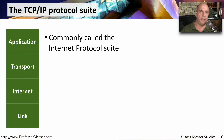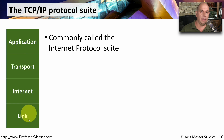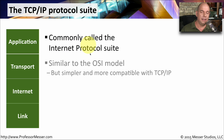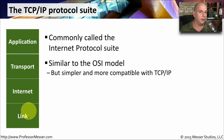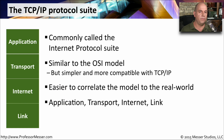The TCP/IP protocol suite is a model with four layers: an application layer, a transport layer, an internet layer, and a link layer. You may hear this referred to as the internet protocol suite. This is similar to the OSI model, but it's obviously a lot simpler, and it fits a lot nicer with the way that TCP/IP operates. Because we only have four layers, it's a bit easier to associate the functions of our applications and our networks back into this model, which makes it a little bit easier to understand.